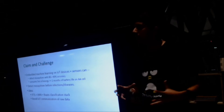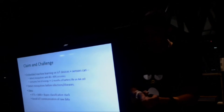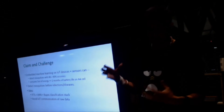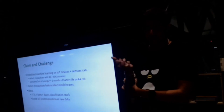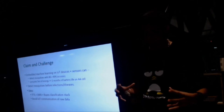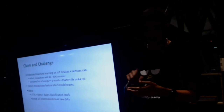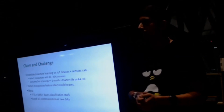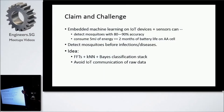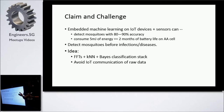So what's the claim? We use embedded machine learning and IoT and we are able to detect mosquitoes with 80 to 90 percent accuracy. The system we've designed will consume on average 5 millijoules of energy — that's like two months on a AA battery cell. The idea is to use FFT, KNN, and a Bayesian classification stack to classify the species of mosquito based on their wingbeat frequency, which is a widely used parameter for classifying mosquitoes.